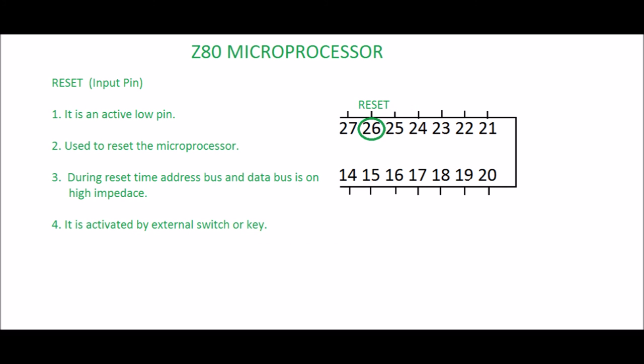Pin 26: RESET. It is an input pin and an active low pin, used to reset the microprocessor. When reset is activated, the program counter (PC), interrupt register (I), and the memory refresh register (R) are all cleared to 0. During reset, the address bus and data bus are in high impedance, meaning the microprocessor cannot use them during reset. It is activated by an external switch or key and must be active for at least 3 clock periods to complete the reset operation, as it needs to clear the program counter, interrupt register, and memory refresh register.